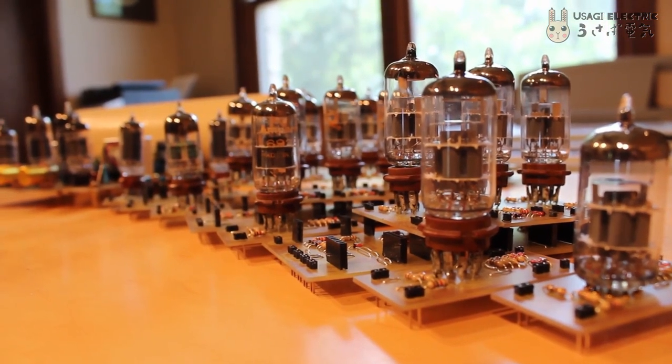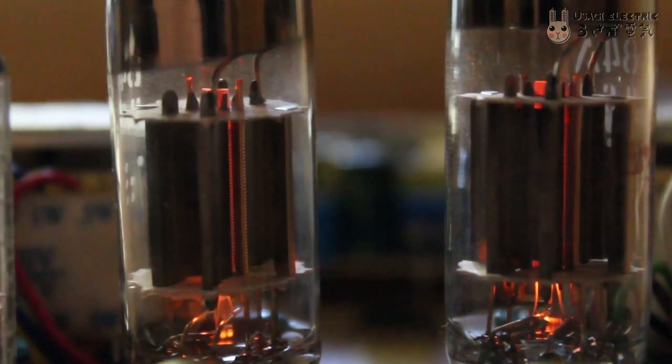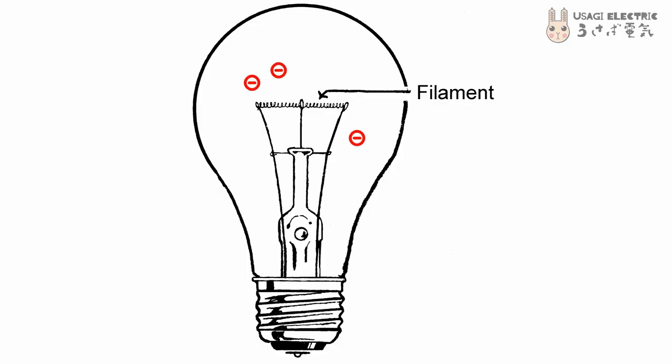Nearly all vacuum tubes operate under just a few fundamental principles, chief among which is thermionic emission, which is the phenomenon that when something with a negative charge is heated up, it tends to emit electrons.